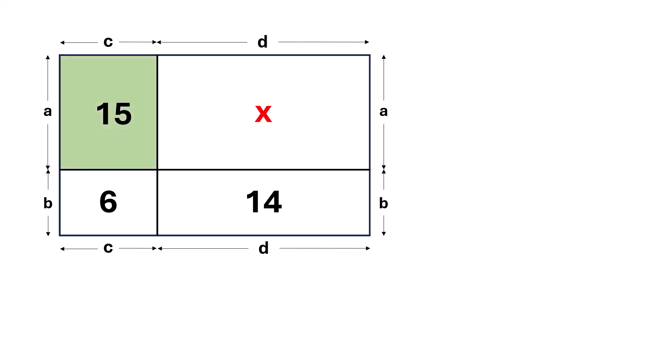Now, focus on this green rectangle. Its length is A and its width is C. The area is given as 15. So, we can write the equation AC equals 15.